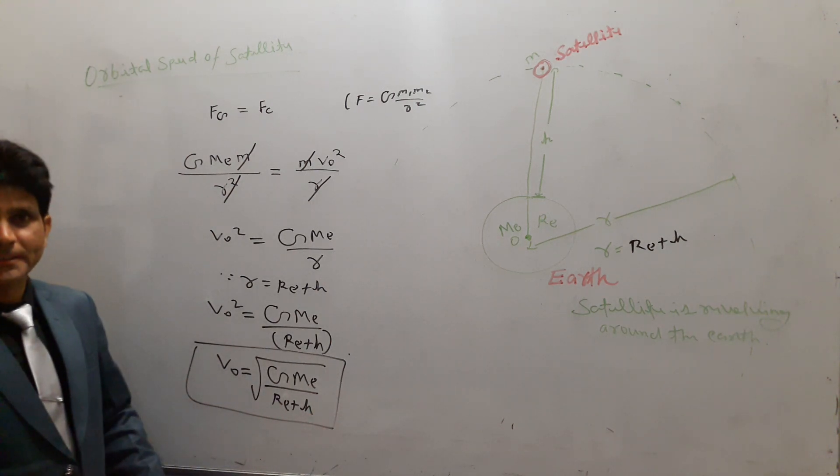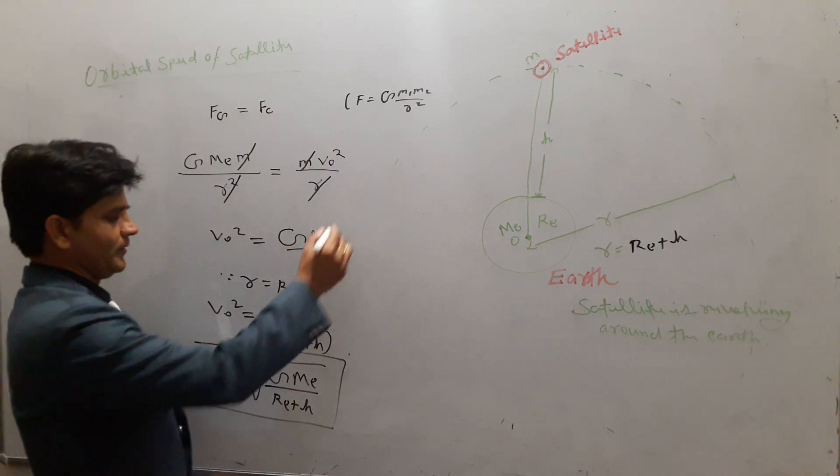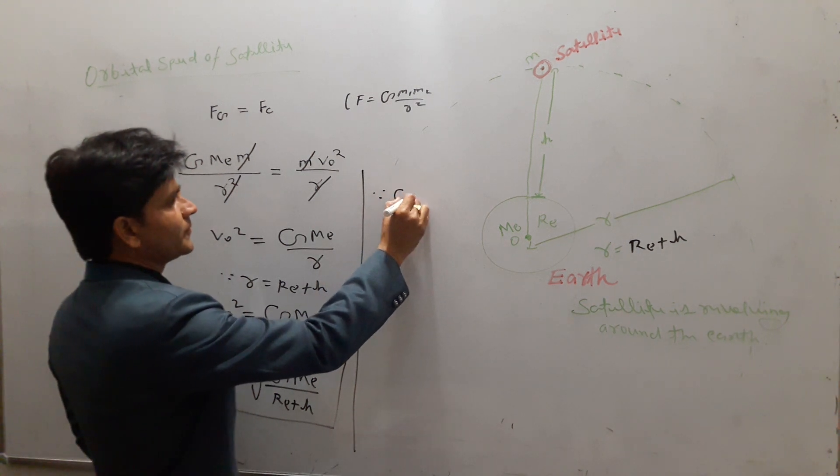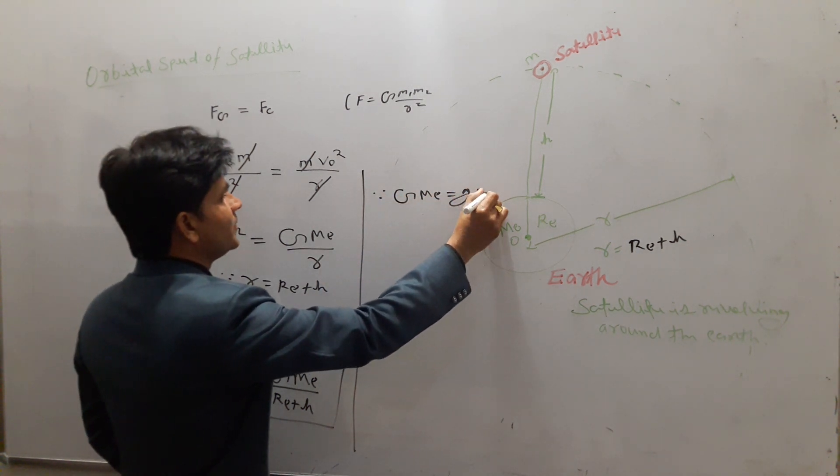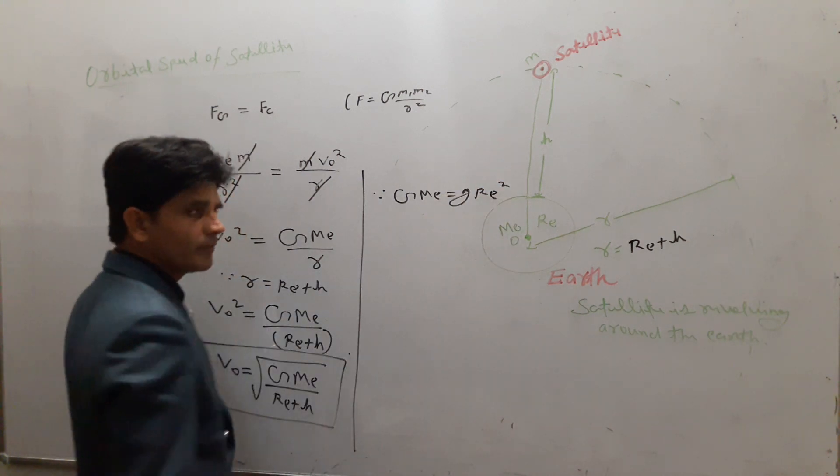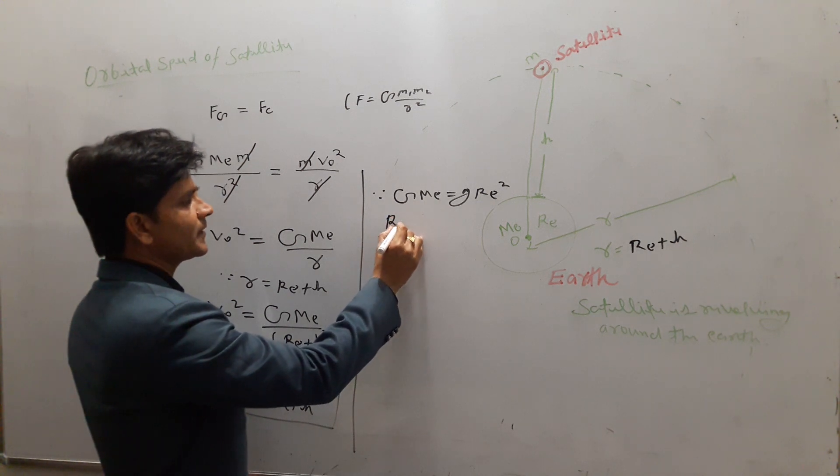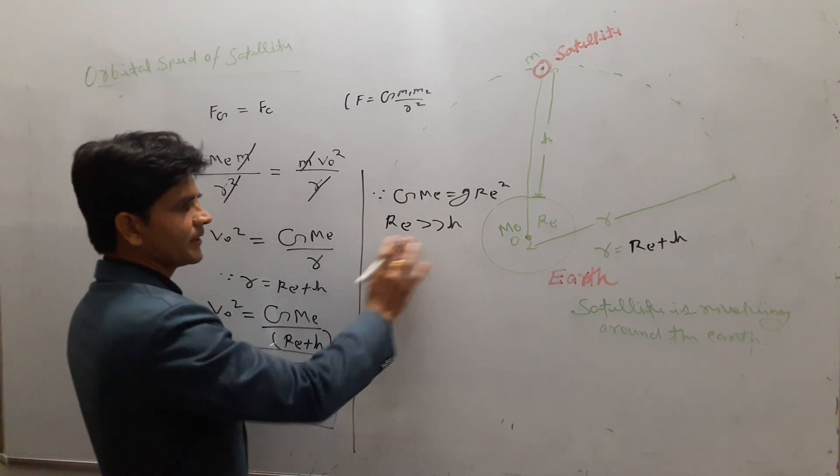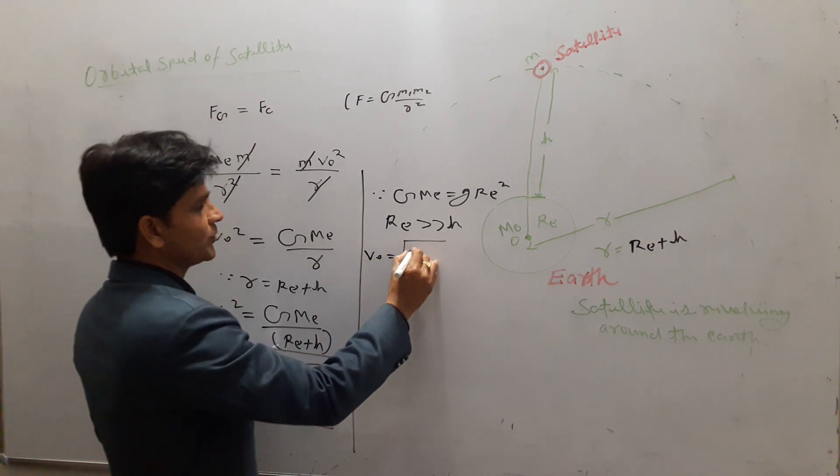If we want to calculate the speed of the satellite revolving very close to the Earth's surface, then, because G × M_E equals g × R_E², where small g is the acceleration due to gravity. And for orbits near Earth, R_E is much greater than h, and h can be neglected. Now, V_0 equals √(G × M_E).